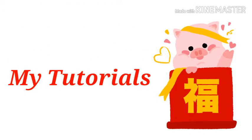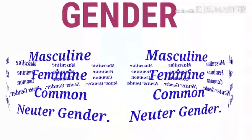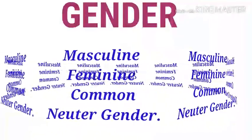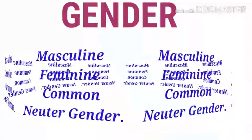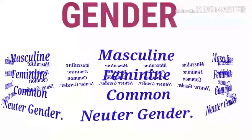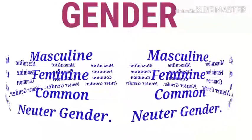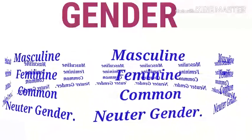Hello friends, welcome to my channel. Today we are going to discuss a very simple topic about English grammar, and that is about gender. All of us are familiar with this word gender, and still there are many things which are unknown about it. As we know, masculine and feminine — there are two more types of gender, known as common and neuter gender.